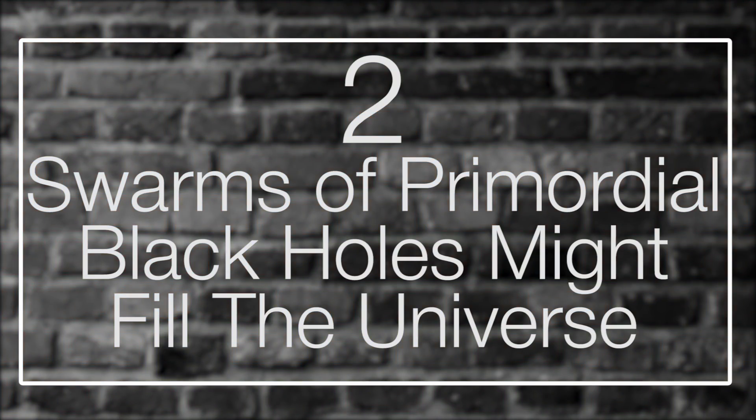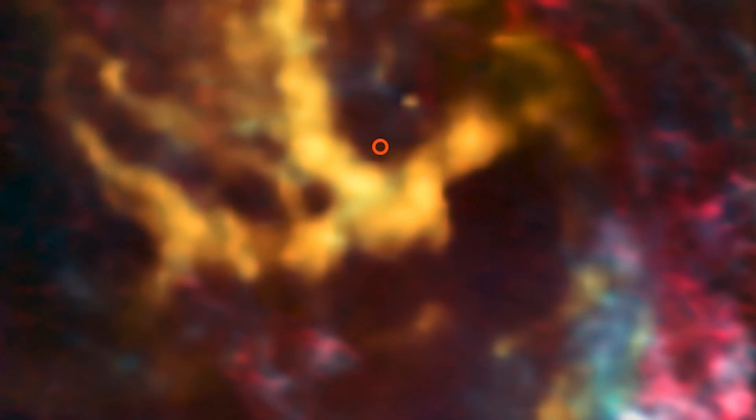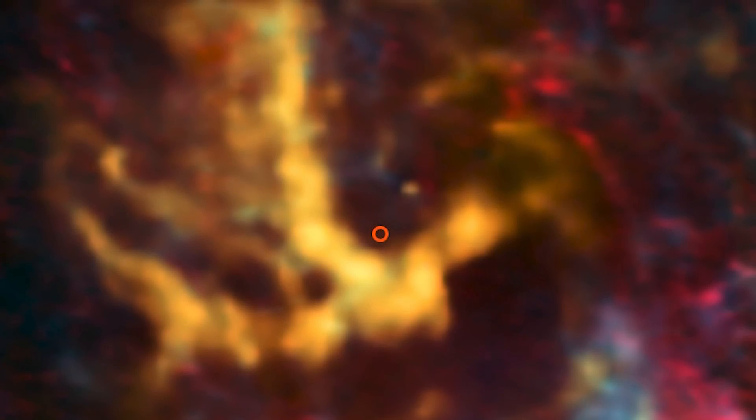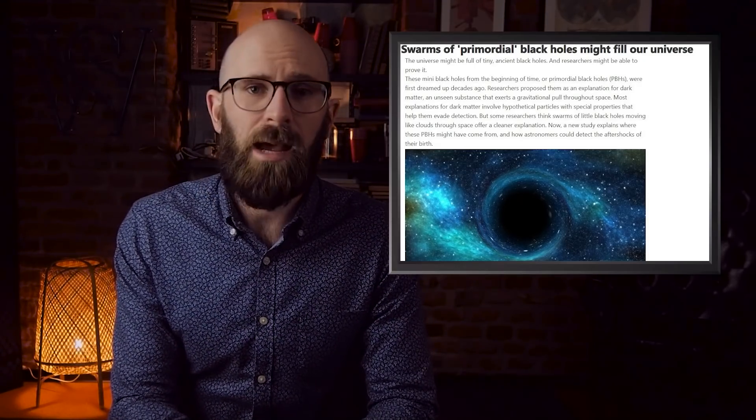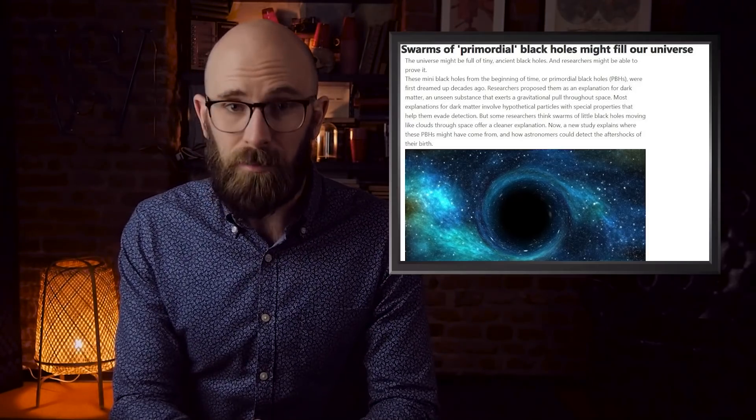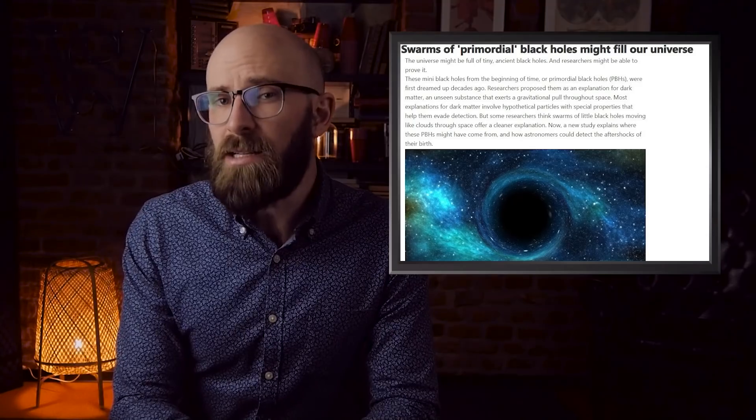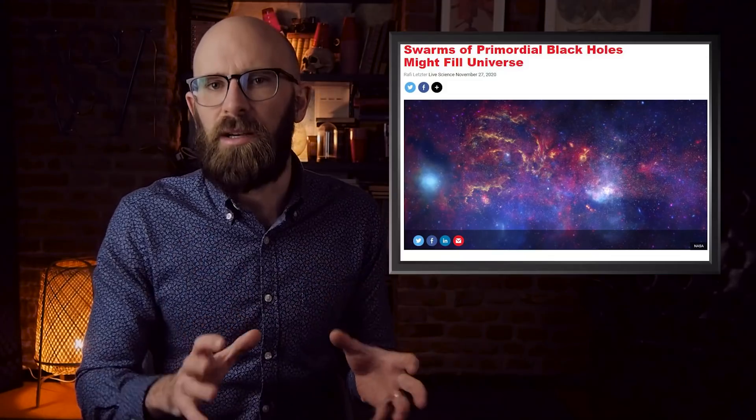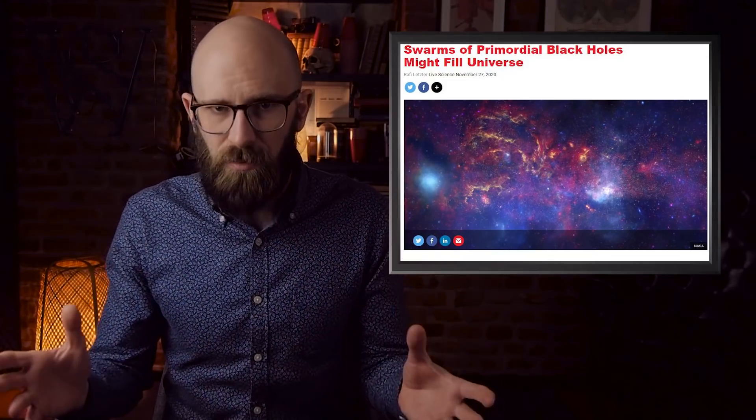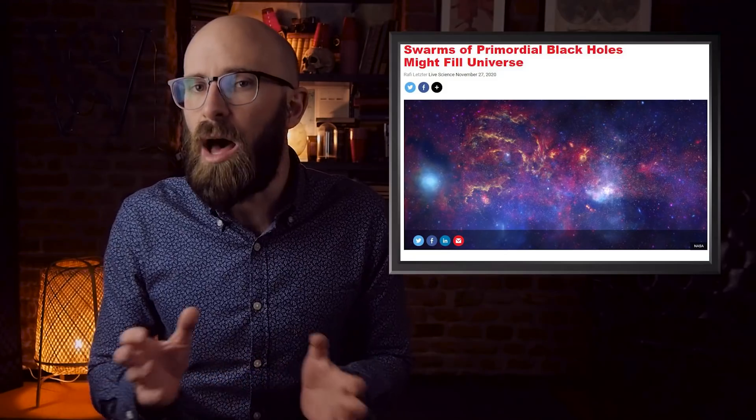Number 2: Swarms of Primordial Black Holes Might Fill the Universe. Many black holes left over from the beginning of space and time as we know it, the Big Bang, may be swarming around our universe. It might sound like science fiction or fantasy, but researchers think that they might be able to actually detect the aftershock left over from their birth. The laws of physics allow for the existence of black holes at any size, and these primordial black holes are thought to have masses equivalent to planets. Right after the Big Bang, at the moment of inflation, researchers suggest that there might have been a moment when space-time was curved before eventually flattening out. That momentary curvature is thought to have produced fluctuations in the expanding universe, ones intense enough to form Earth-mass black holes.